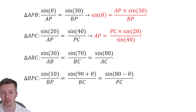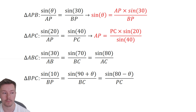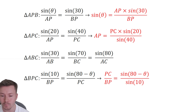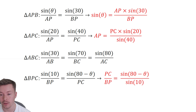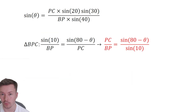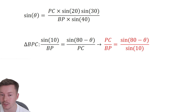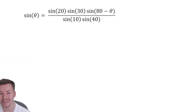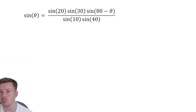If we can find an equation for PC over BP, we can substitute that in and get rid of all the sides — ending up with an equation purely in terms of sines. Going back to our sine rule equations, the equation for PC over BP comes from triangle BPC using the first and last sine rule fractions, giving us PC over BP equals sine(80 minus theta) over sine 10.